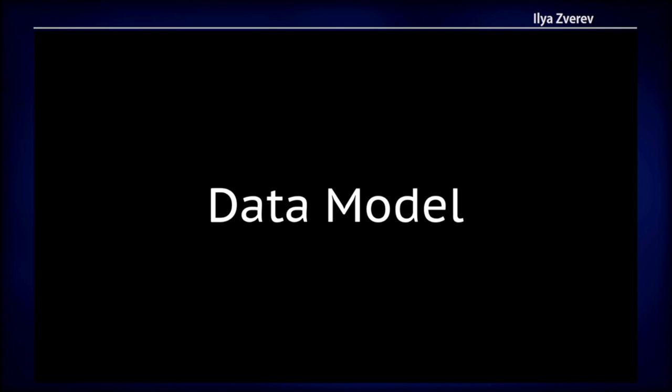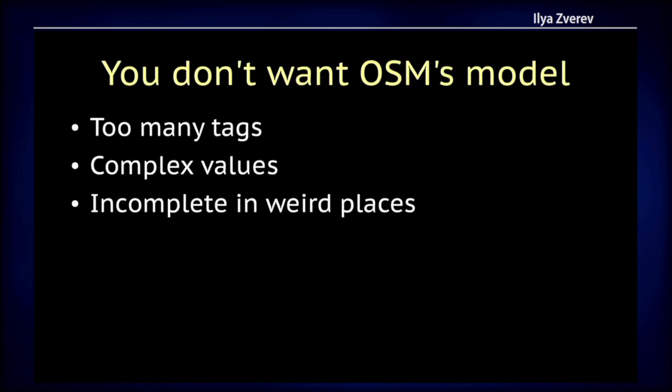With OpenStreetMap, you get tags. The data model has evolved over 18 years with thousands of people contributing, and you can imagine what happens. There are some obvious tags like name — well, kind of. There are types, which are kind of simple — but not really. There are open hours, which are documented but not easy to parse. And there are ambiguous tags, like for floor in a shopping mall, we have three different tags with different semantics.